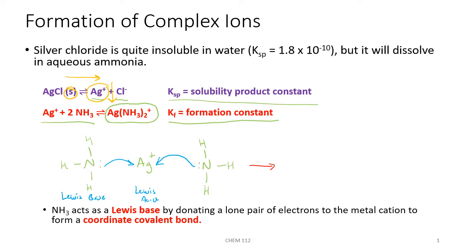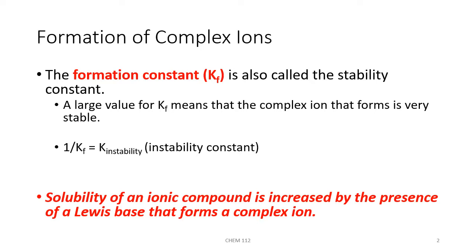The lone pair of electrons on the ammonia attacks the silver ion, forming a new coordinate covalent bond, and we get a complex ion where silver is bonded to two ammonia molecules. Since silver had a plus-one charge, the total complex also has a plus-one charge. By forming a complex ion, you end up increasing the solubility of your slightly soluble salt. The formation constant K sub F is also called the stability constant; a large K sub F means complex ion formation is very stable and favored.